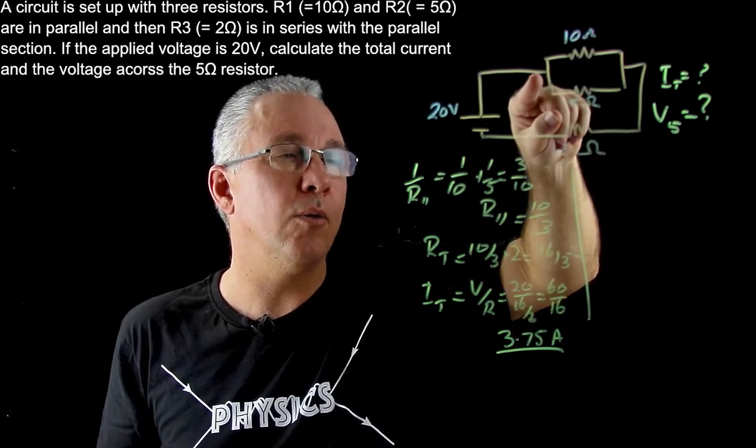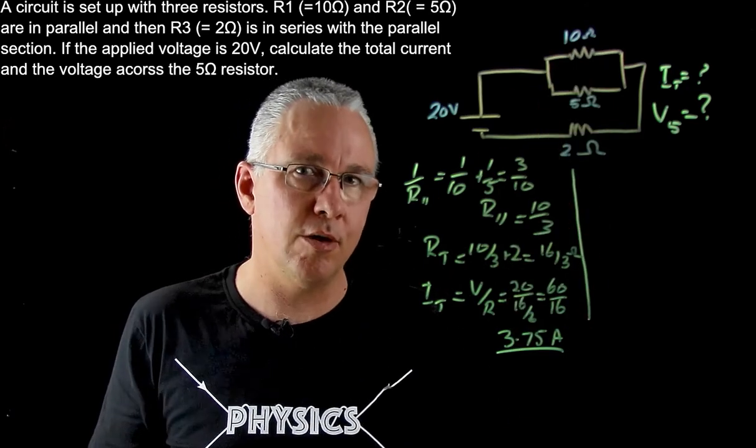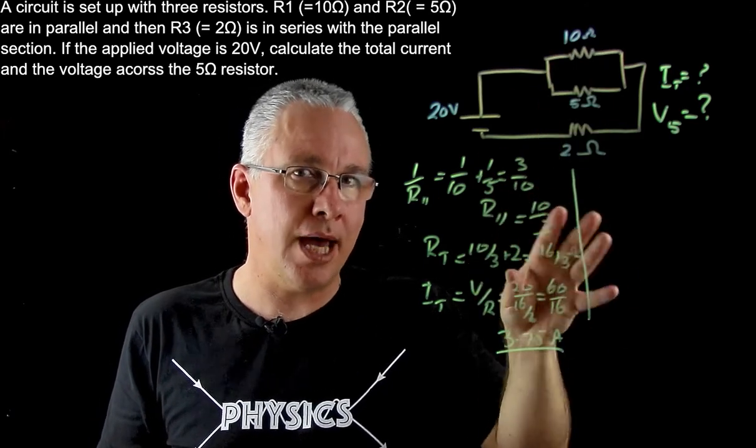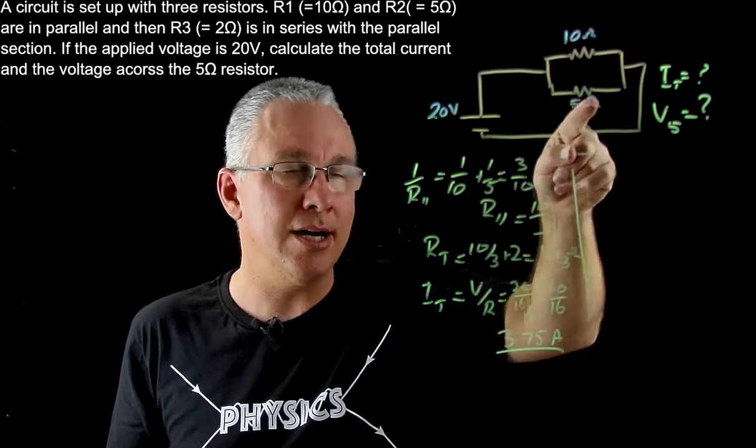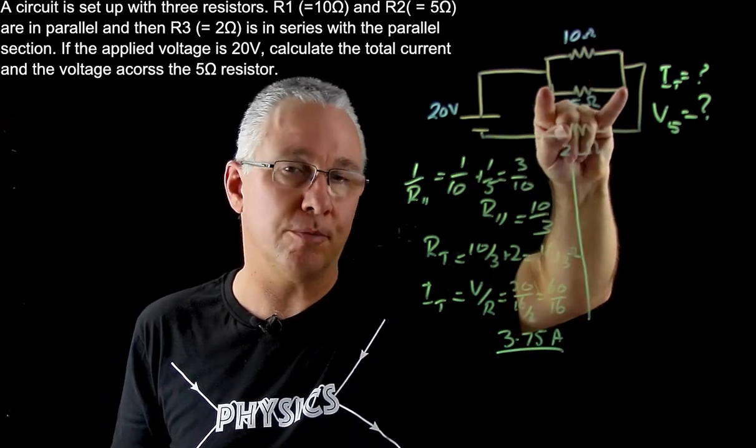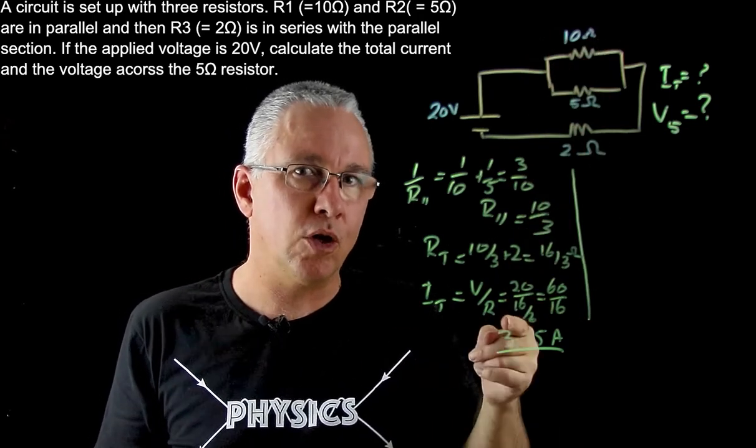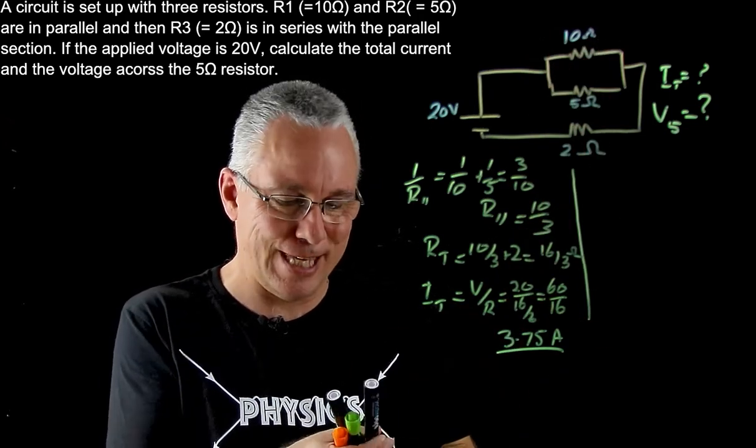and only one part going through the 10 ohm resistor. You can use that principle to work out the current and voltage drop. Of course, the voltage drop across the 5 ohm resistor is the same as the voltage across the 10 ohm resistor. Now that's probably a little bit more complex, so I'm going to do the former method.